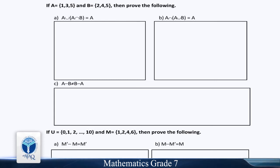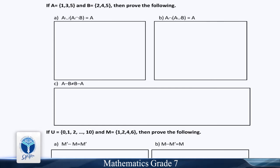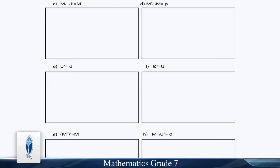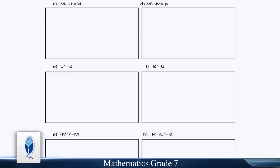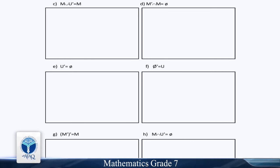If U = {0, 1, 2, ..., 10} and M = {1, 2, 4, 6}, then prove the followings: M complement minus M = M complement; M minus M complement = M; M union U complement = M; M complement intersection M = empty set; U complement = empty set; empty set complement = U; complement of M complement = M; M intersection U complement = empty set.